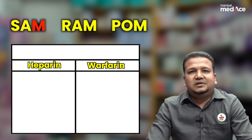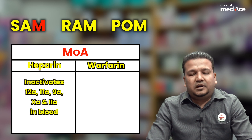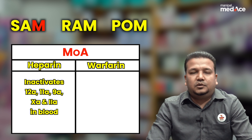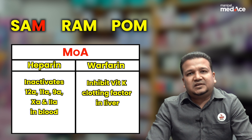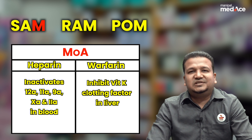M stands for mechanism of action. Heparin acts to inactivate the clotting factors in blood, that is clotting factor 12A, 11A, 9A, as well as factor 10A and 2A. Warfarin acts in the liver to inhibit the activation of vitamin K dependent clotting factors, that is 2, 7, 9 and 10.